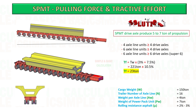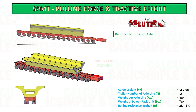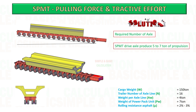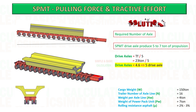A self-propelled modular transporter drive axle produces 5 to 7 tons of propulsion. For this example I consider 5 tons. To get the required number of drive axles, divide the tractive effort by 5.